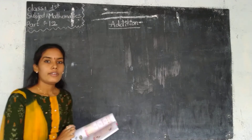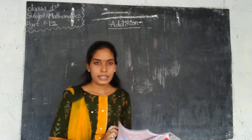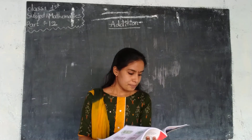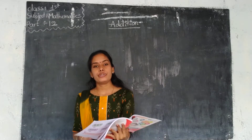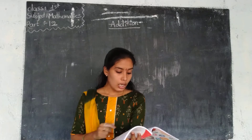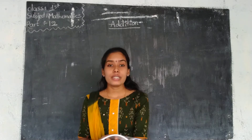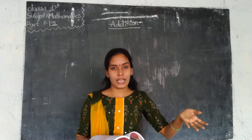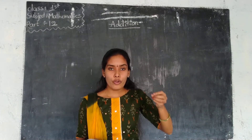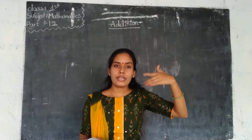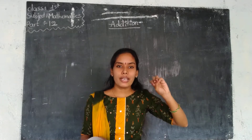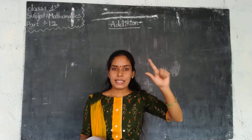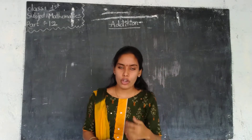Good morning children. Welcome to the Mathematics session. In the previous class we learned picture addition, adding 0 to a number, how to add using the number 9, and addition using forward counting. For example, 4 plus 2: you start at 4 and count forward 2 times — 5, 6. So this is the counting forward method.